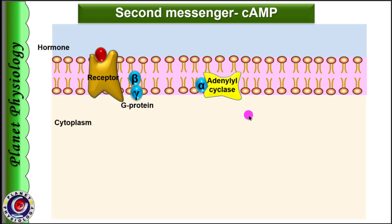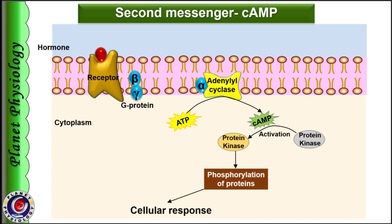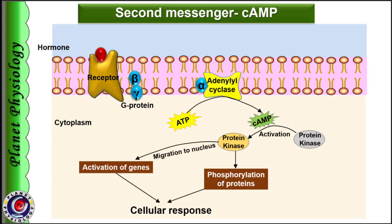Activated adenyl cyclase converts ATP in the cytoplasm to cyclic AMP, which in turn activates protein kinase. Activated protein kinase causes phosphorylation of proteins, and depending upon the type of proteins which get phosphorylated, cellular response will be seen. Some types of protein kinases can migrate to the nucleus and activate specific genes to produce proteins. Thus, in this case, cyclic AMP acts as second messenger that triggers the cascade of reactions to initiate the cellular response.